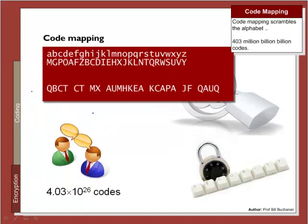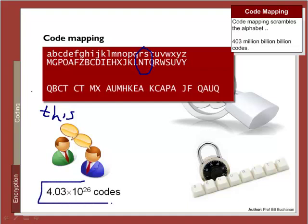A more advanced version is to scramble the alphabet. In this case the letters have been scrambled, so a Q maps to T, B maps to H, C maps to I, and T maps to S. The advantage here is that we now have 4 times 10^26 possible mappings — that's 403 million billion billion codes — so it looks like a fairly secure coding system.